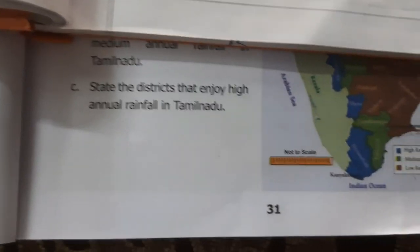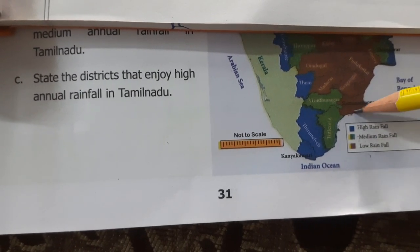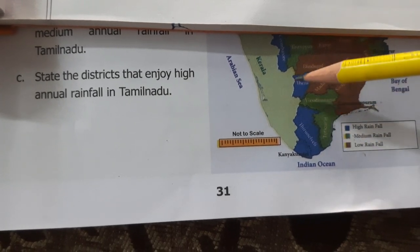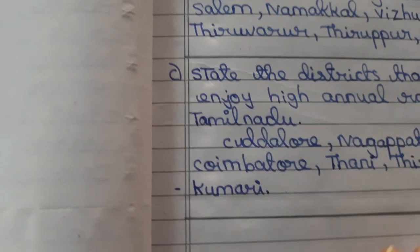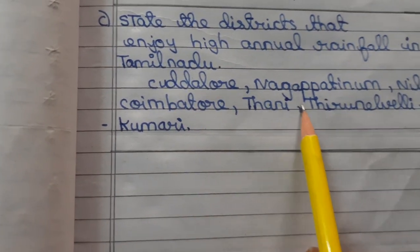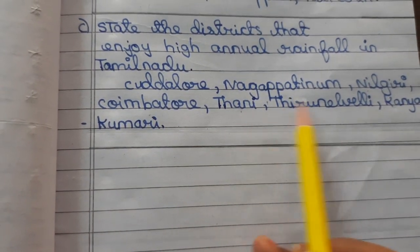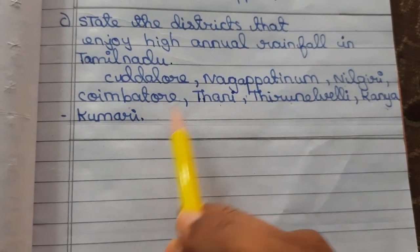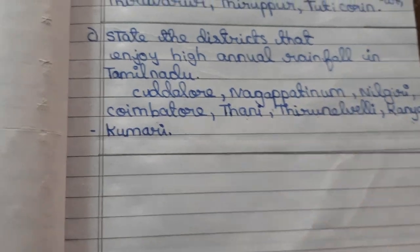State the districts that enjoy high annual rainfall in Tamil Nadu. The high rainfall districts shown in blue are: Cuddalore, Nagapattinam, Nilgiris, Coimbatore, Theni, Tirunelveli, and Kanyakumari.